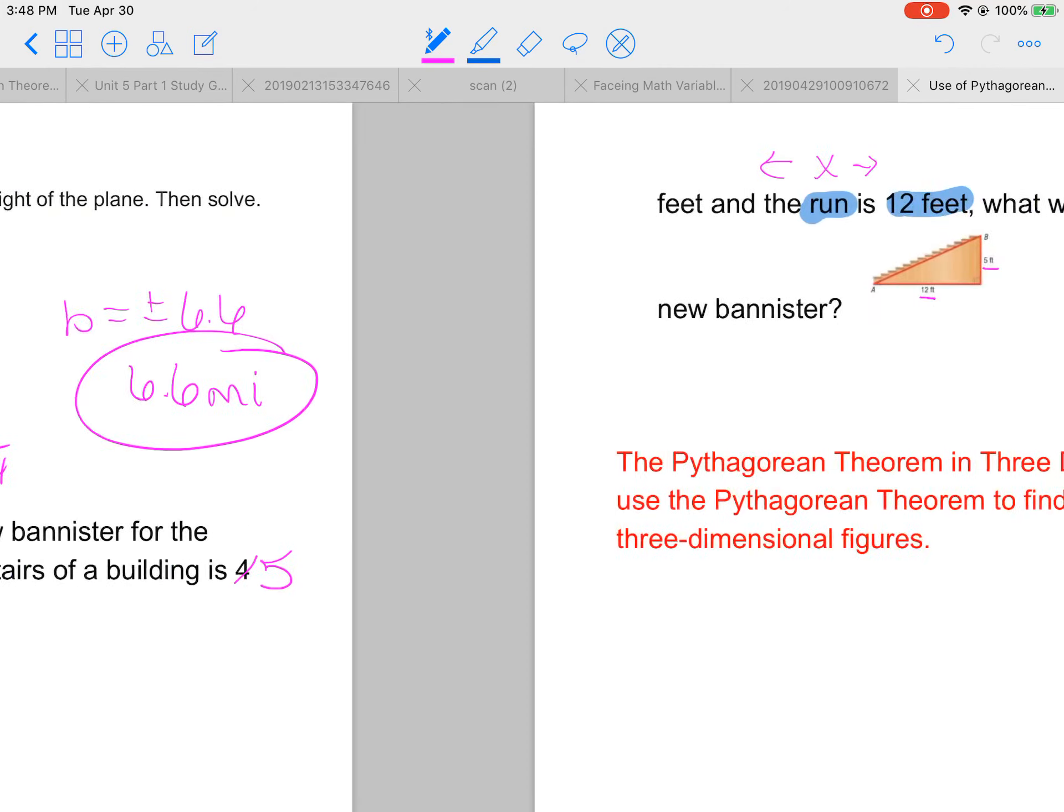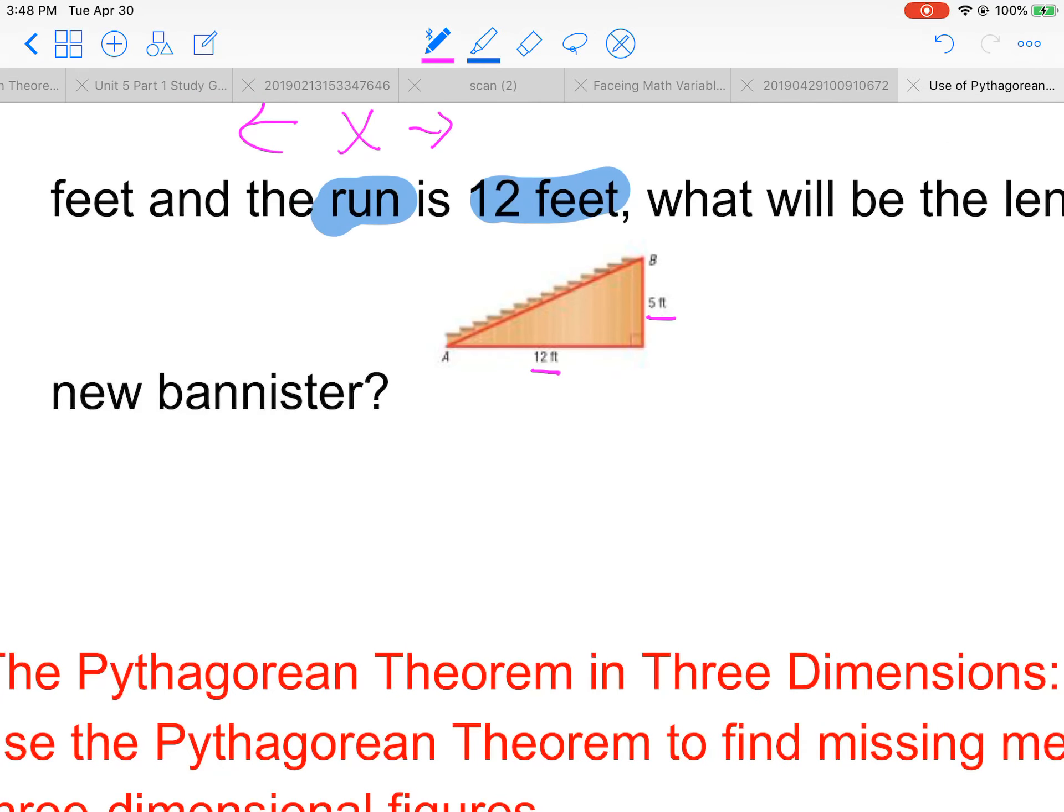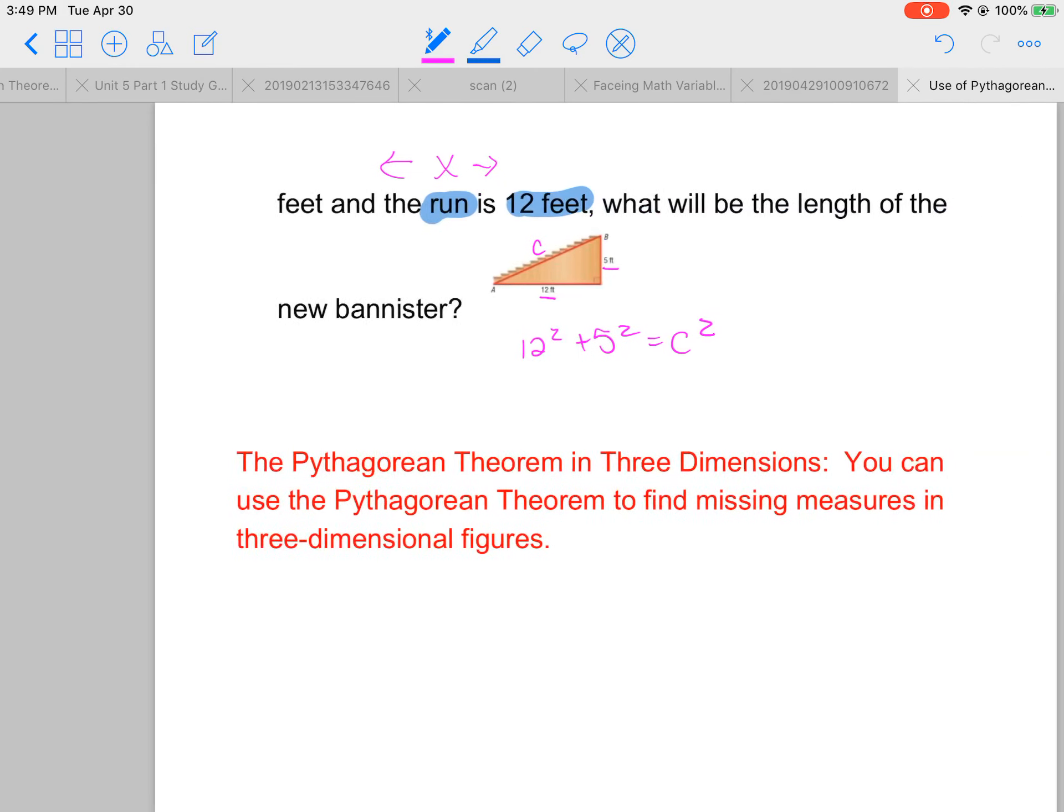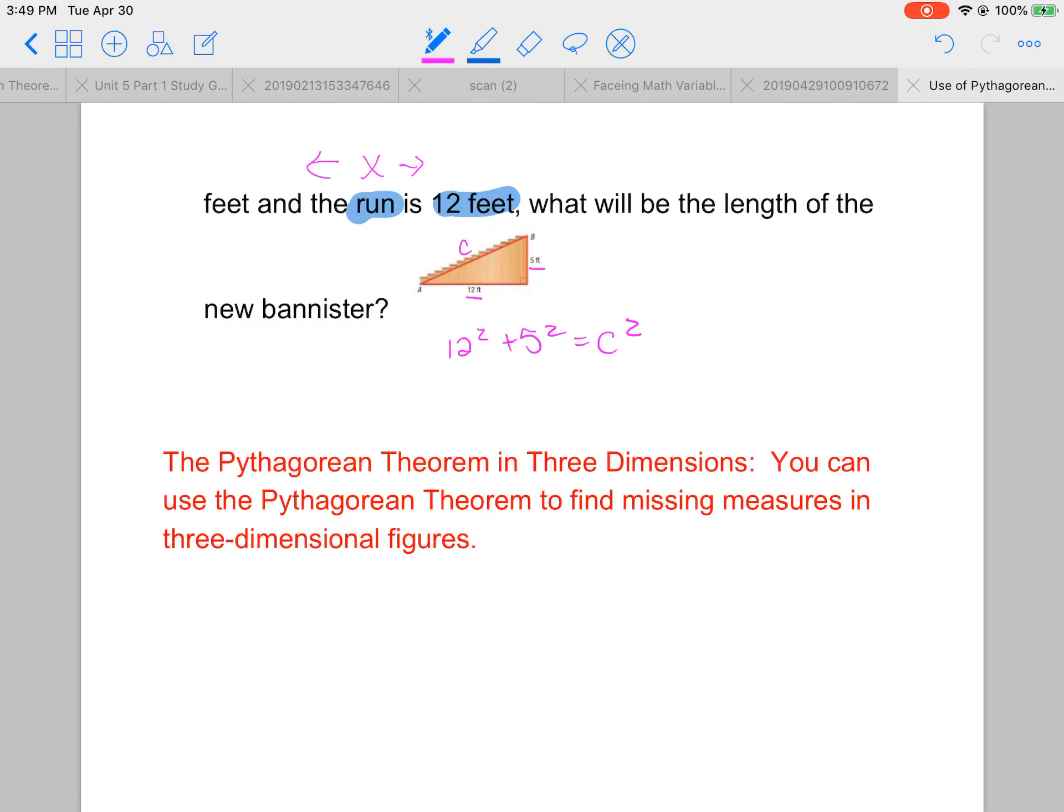This will be a good check to see if you're paying attention. If you get this right and catch my little mistake there, my little typo. So you're using the information given. We are missing the banister, which is our hypotenuse. So we would do 12 squared plus 5 squared equals C squared.